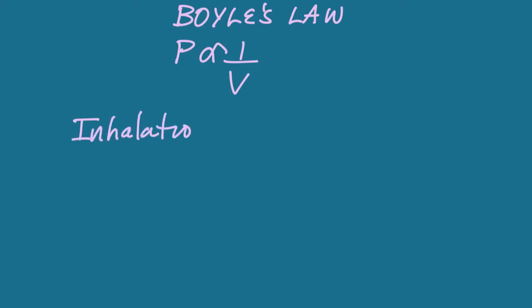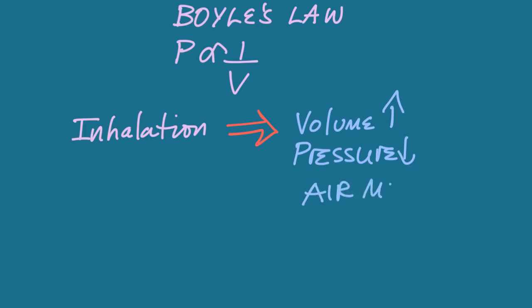During inhalation, the volume in the thoracic cavity increases. And as a result, the pressure in the thoracic cavity goes down. This allows air to move in from the outside down the pressure gradient.